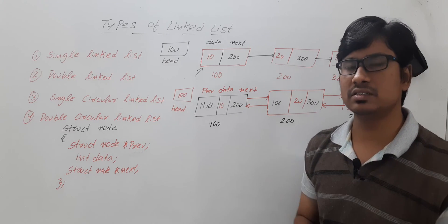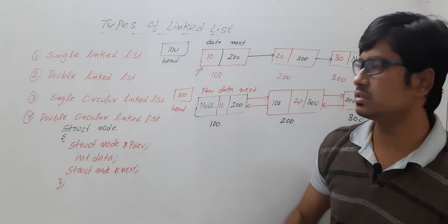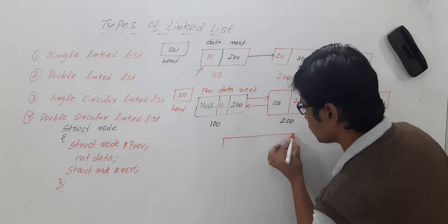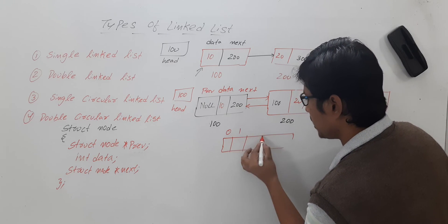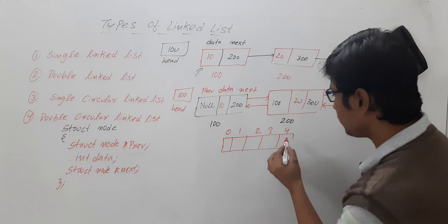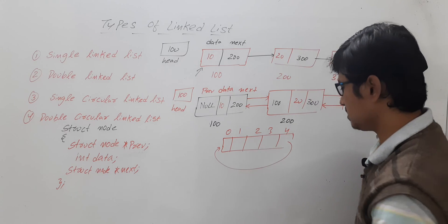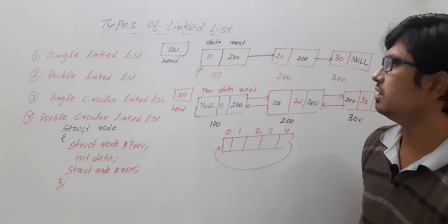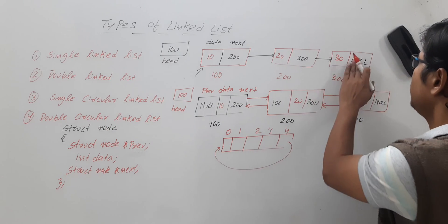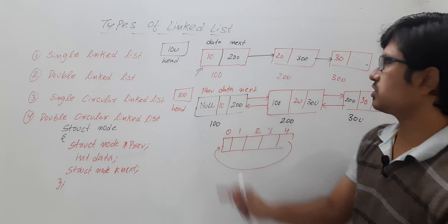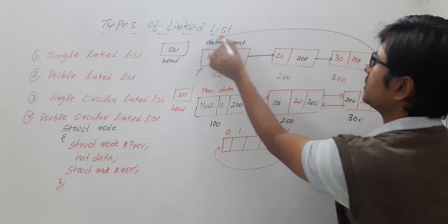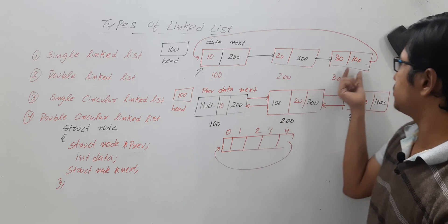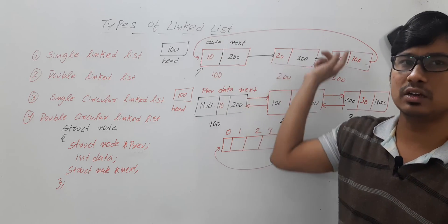Insertion and deletion for the double linked list will be discussed in coming videos. Now, let's discuss the single circular linked list. In circular, the last node connects back to the first node. Similar to how we discussed circular arrays with indices 0, 1, 2, 3, 4 looping back to 0 — a single circular linked list is when the last node's pointer holds the address of the first node, such as address 100.